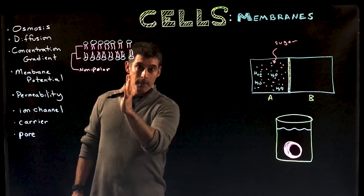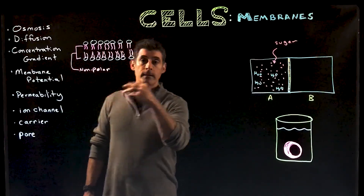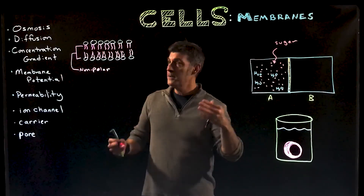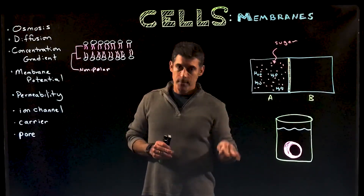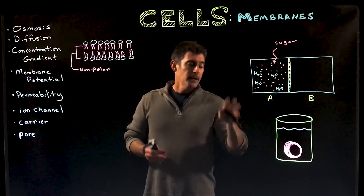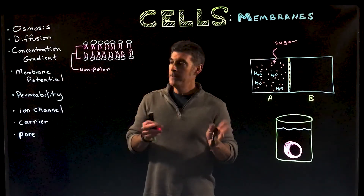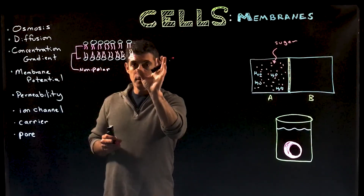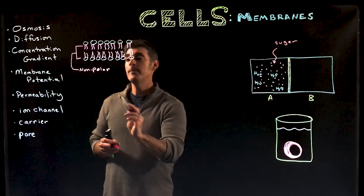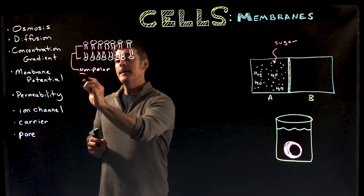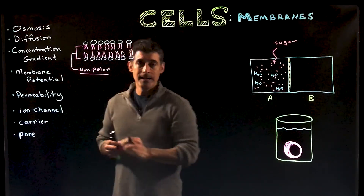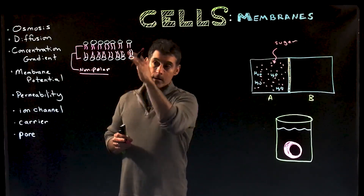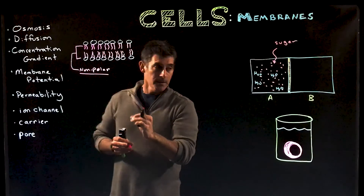We already have our membranes — the phospholipid bilayer with the cholesterol, proteins, and sugars. At this point, we're going to be looking at transport and movement across the membrane. For now, we're focused on just the phospholipid bilayer and the nonpolar environment created by the tails, which creates our barrier across the membrane from one side to the other.